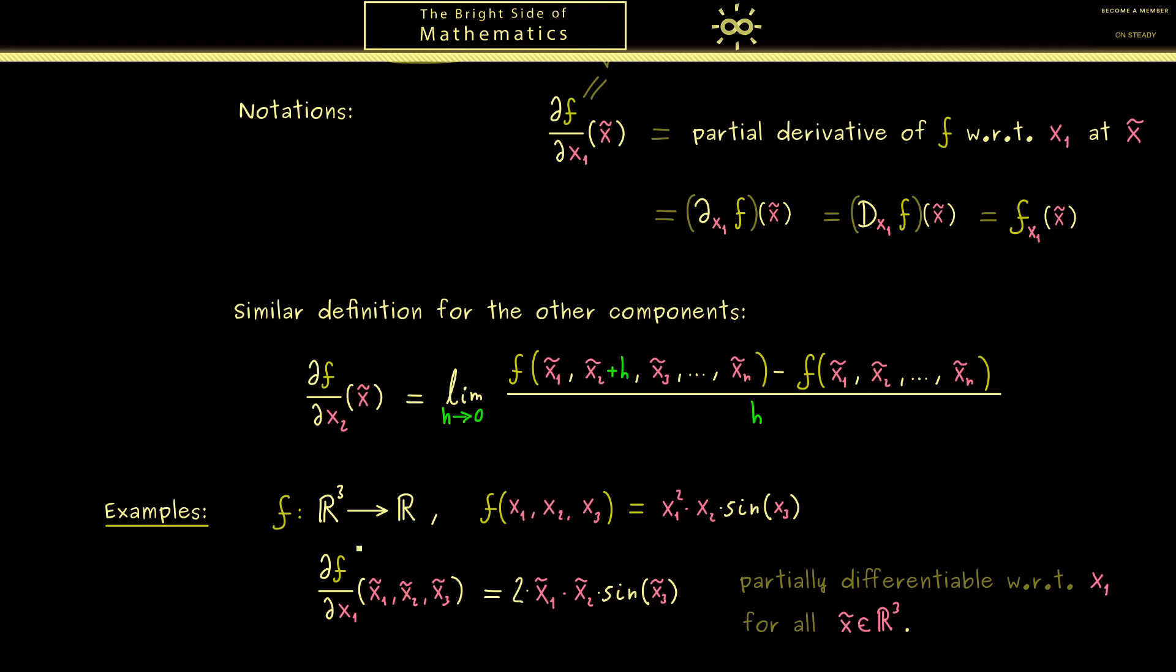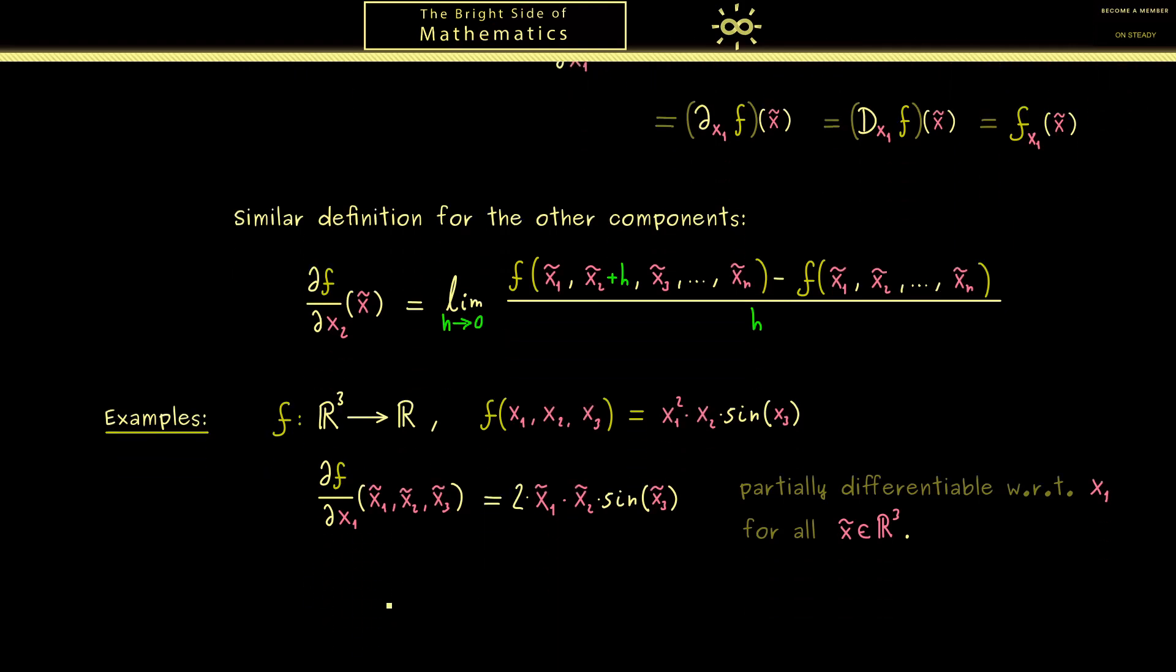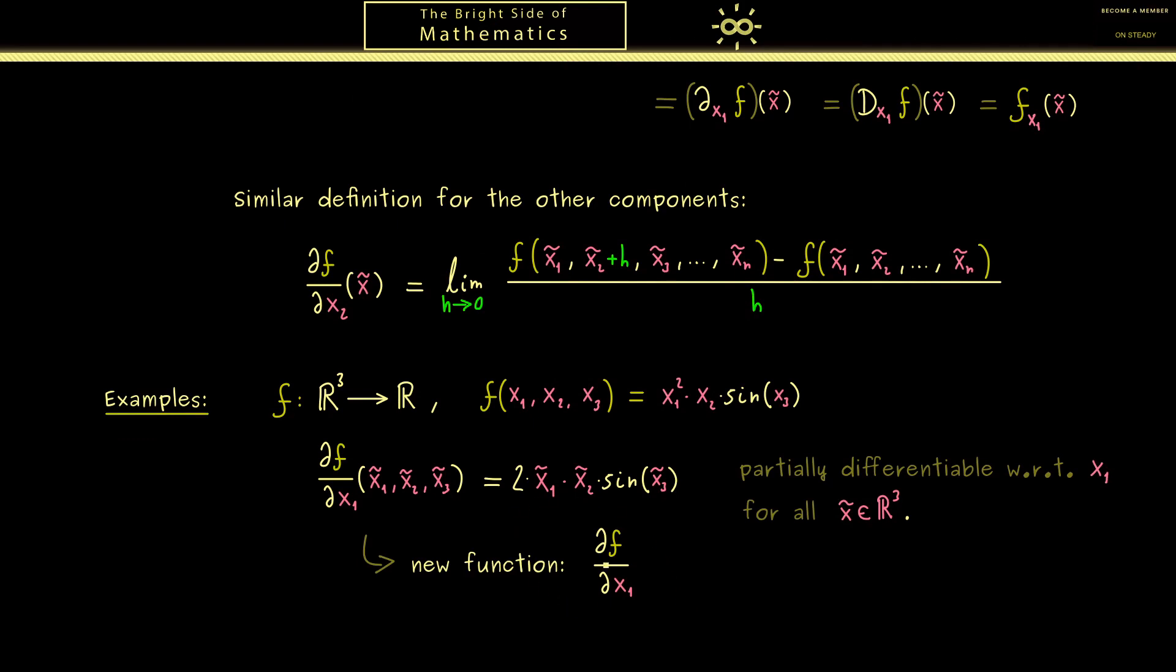So in summary, we have that f is partially differentiable with respect to x₁ for all points x̃, and therefore the partial derivative here gives us a new function. And obviously we can just call this new function ∂f/∂x₁ and it is defined on ℝ³. So you see this works like in the one-dimensional case where the derivative can give us a new function we can calculate with.